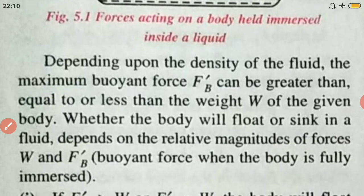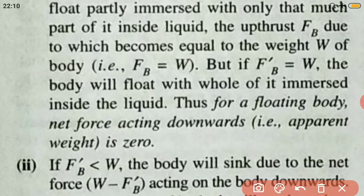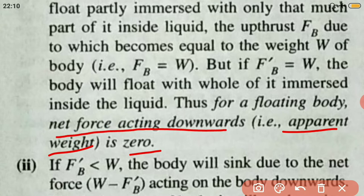Under both conditions — when FB dash is greater than W and the body floats partly submerged, or when FB dash equals W and the whole body is submerged — the apparent weight of the body is zero. Thus, for a floating body, the net force acting downwards should be zero.